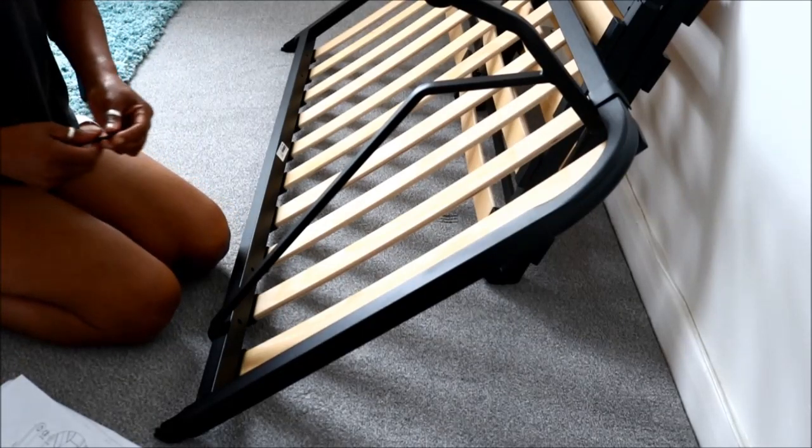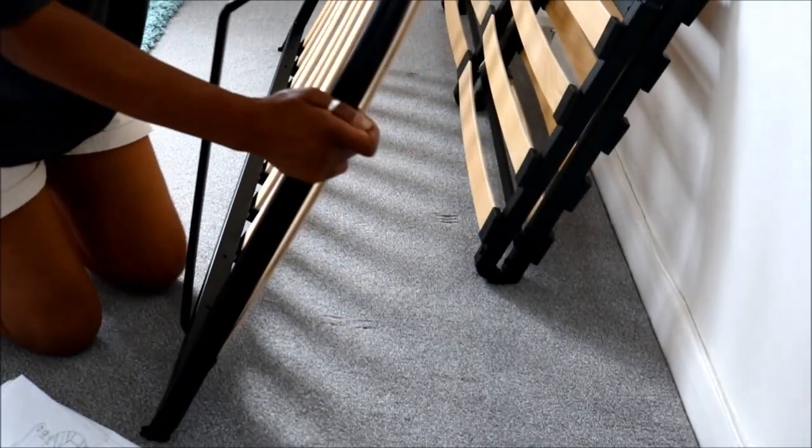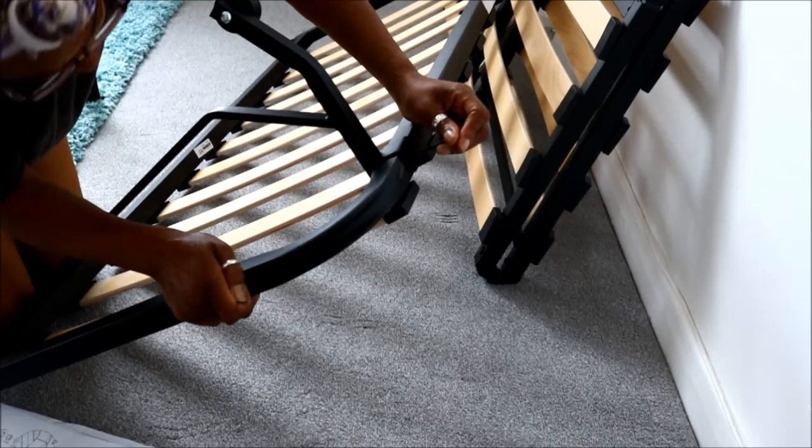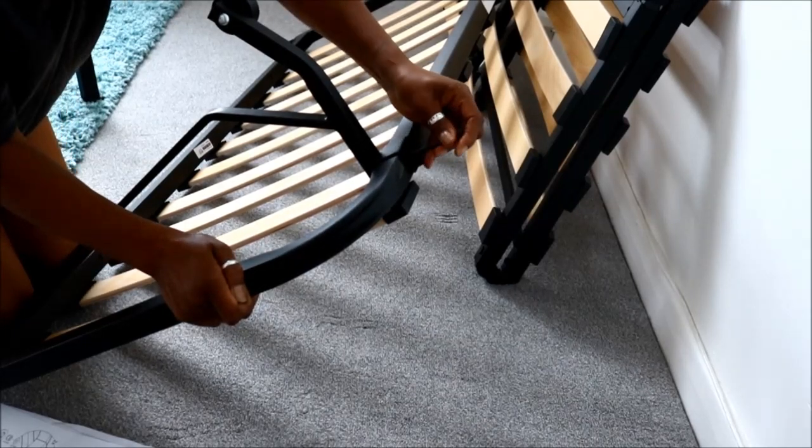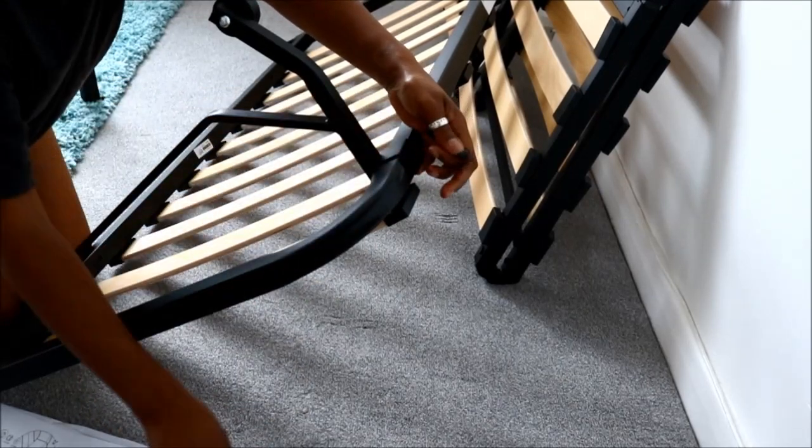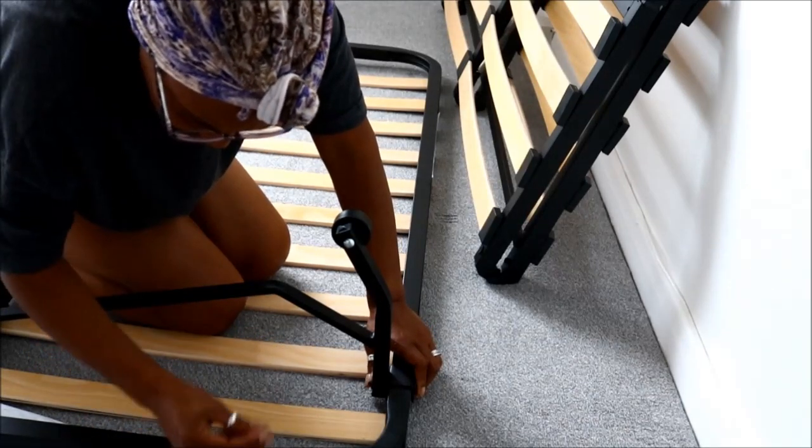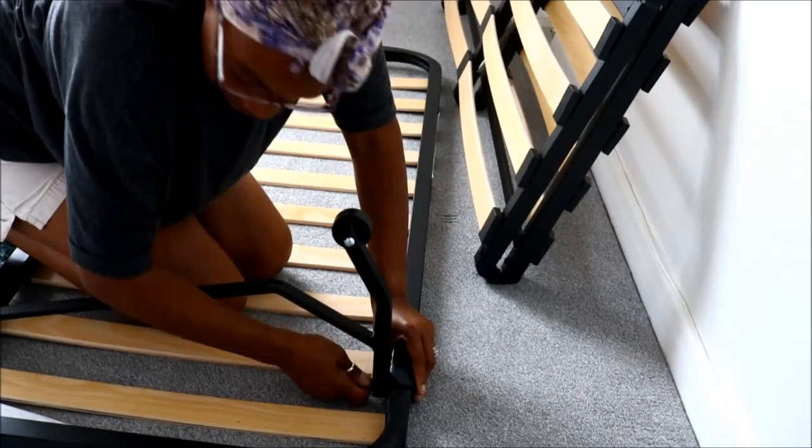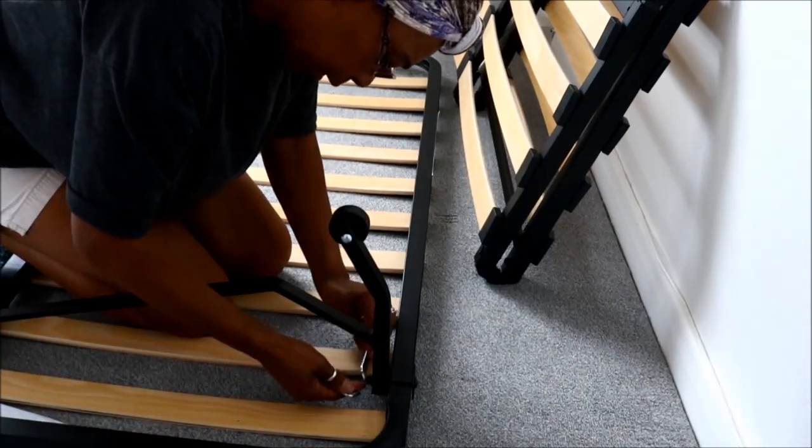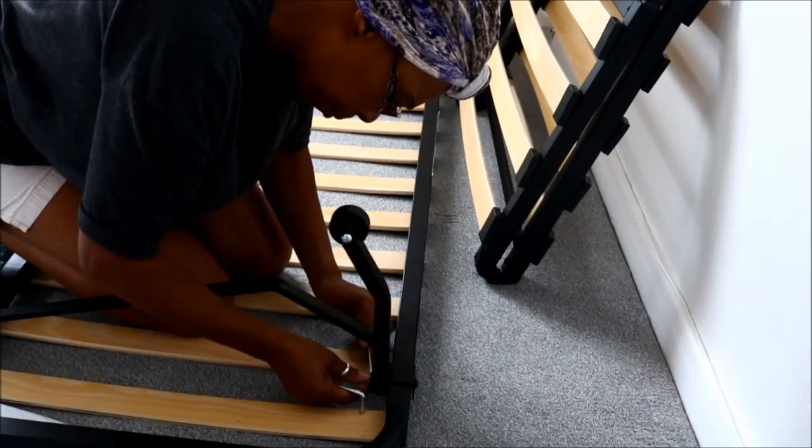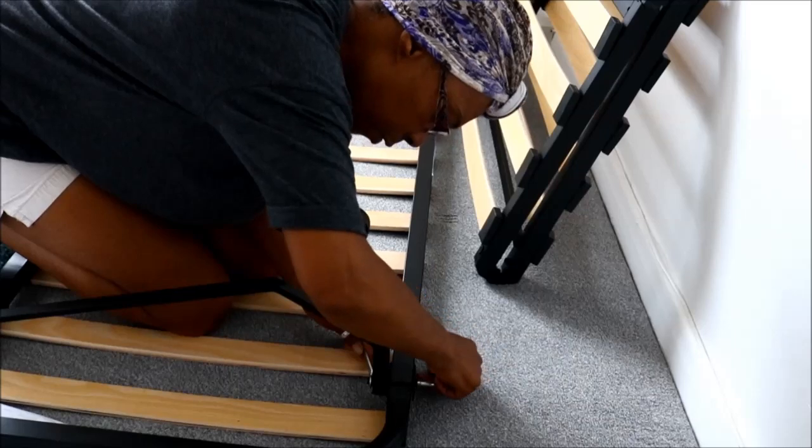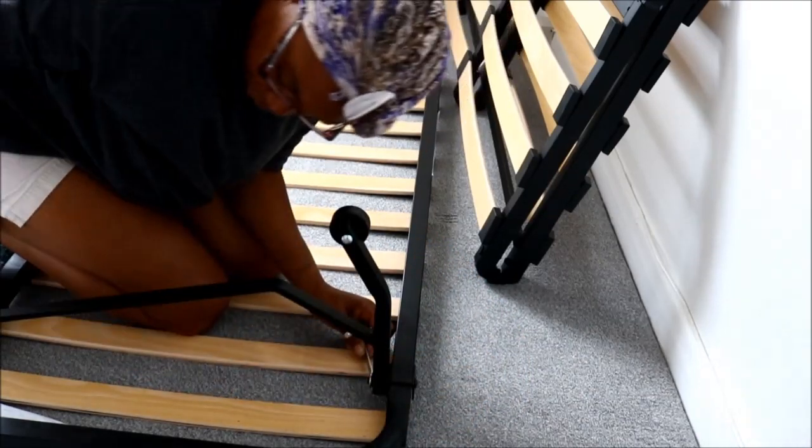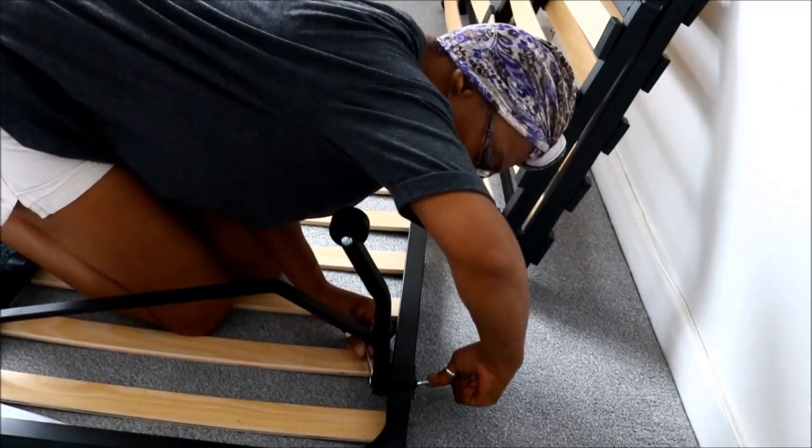So we put the washer and the bolt, then it goes. Washer and bolt, and the spanner and the allen key. Put the spanner onto it. And I'm just going to do it loosely. I'm not going to over-tighten it because I'm going to have to straighten the bottom when it comes to the bottom. So I'll just do it lightly.